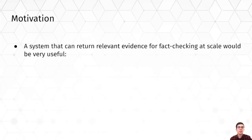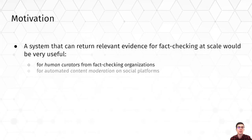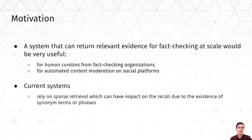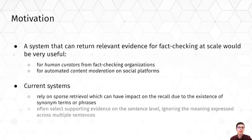The first motivation behind our work is the usefulness of an evidence-aided system. Such a system would be useful for human curators from fact-checking organizations and for automatic content moderation on social platforms. The second motivation is the limitations of current systems, which rely on sparse retrieval — impacting recall due to synonym mismatches — and often select supporting evidence at the sentence level, ignoring meaning expressed across multiple sentences.